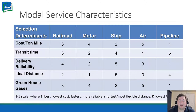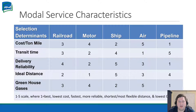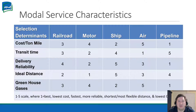Looking at modal service characteristics, on this chart we have rail, motor, ship, air, and pipeline, rated one through five with five being the best. When it comes to cost per ton mile, pipeline is the best while air is the most expensive. However, air is the fastest mode of shipment where pipeline is the slowest — kind of a flip there.